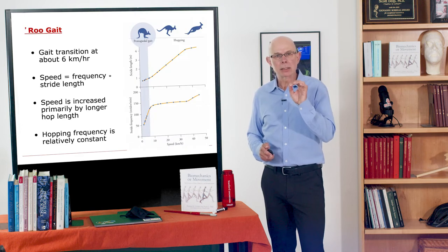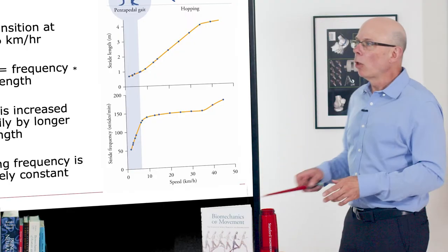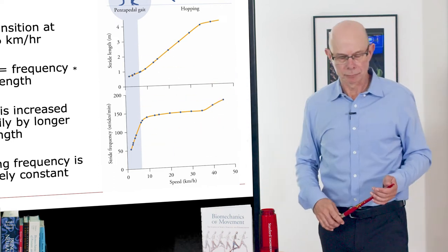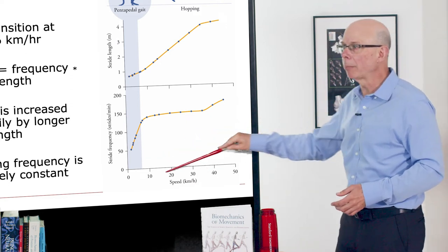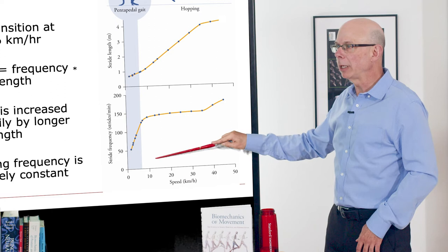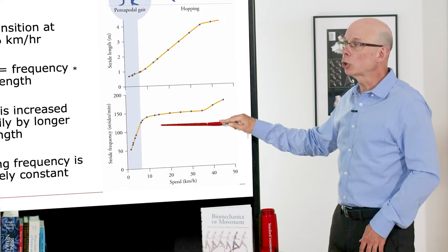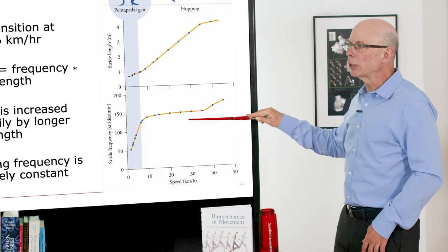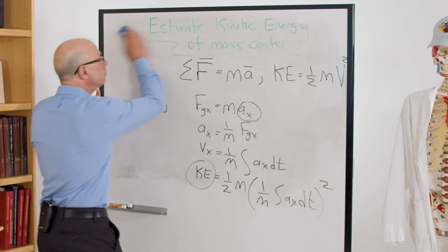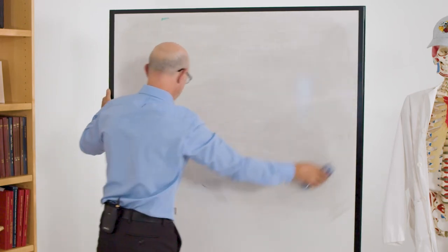So let's analyze the kangaroo gait energetics in a little bit more detail. So what I'm plotting here is on the top plot the stride length, and on the bottom plot the stride frequency. And I'm plotting those versus the speed of hopping in kilometers per hour. What you see in this shaded region is pentapetal gait down here at low speeds. And the stride length during pentapetal gait increases with speed. Once you transition to hopping, the stride frequency is relatively constant. So why is that? Why is stride frequency constant?